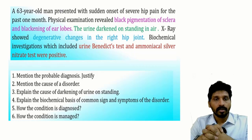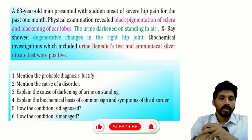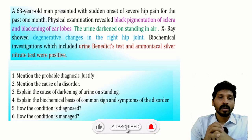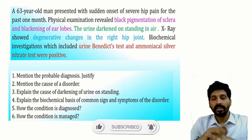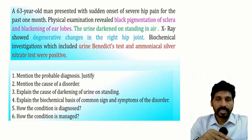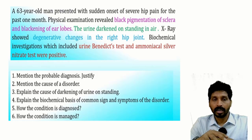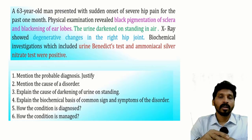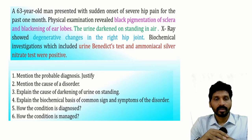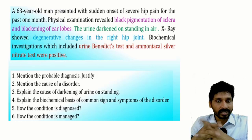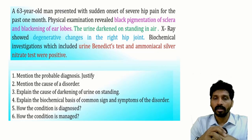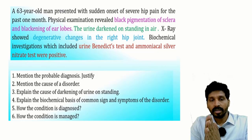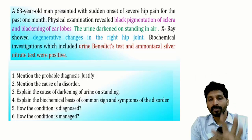First, we will see the case. A 63-year-old man presented with sudden onset of severe hip pain for the past one month. Physical examination revealed black pigmentation of the sclera and blackening of the ear lobes. The urine darkened on standing in air. X-rays showed degenerative changes in the right hip joint. Biochemical investigations included urine Benedict test and ammoniacal silver nitrate test — both positive.